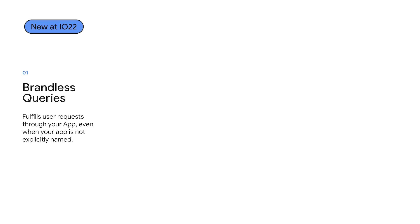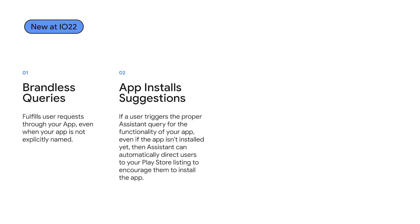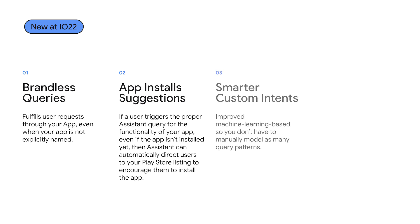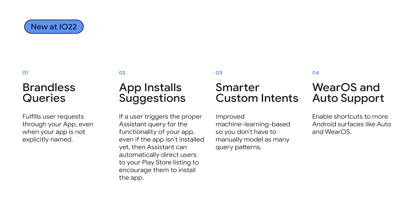At this I/O we're announcing a slew of new features that further enhance the App Actions platform. Brandless queries now allow Assistant to fulfill user requests through your app even when your app is not explicitly named. We're also announcing app install suggestions, where Assistant can automatically direct users to the Play Store listing to encourage them to install your app. With smarter custom intents, we've improved the machine learning grammar expansion that triggers your app, meaning you don't have to manually model as many query patterns. And finally, we are enabling shortcuts to more Android surfaces like Auto and Wear OS. Please watch the Assistant Across Devices and Assistant on Auto talks for more details.